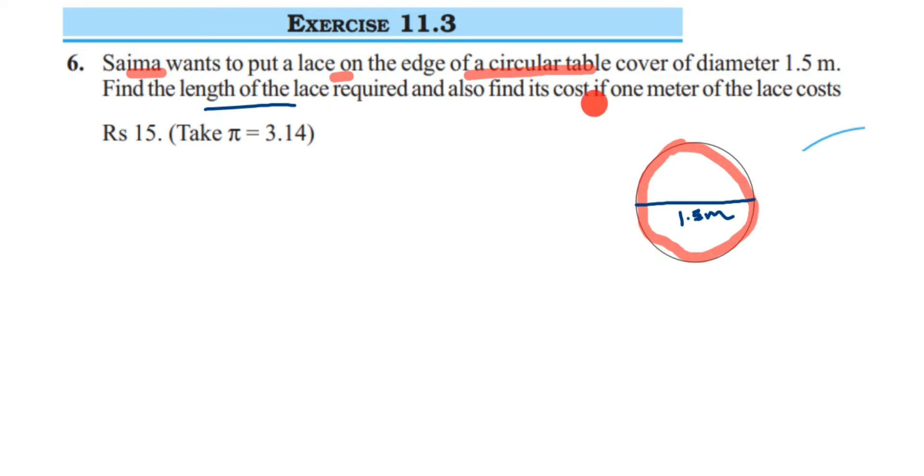So let's start solving this. They have given the diameter is 1.5 meter. They have not given the radius, they have given the diameter. So let's write down what is given. They have given diameter is 1.5 meter. Now I want the radius, so radius is nothing but half of the diameter.